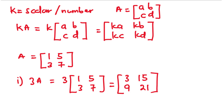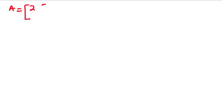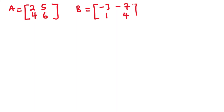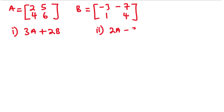Let's try some more examples. Given that matrix A is [2, 5, 4, 6] and matrix B is [-3, -7, 1, 4], we need to find: (I) the matrix 3A + 2B, and (II) the matrix 2A − 3B.